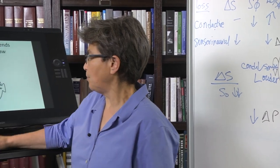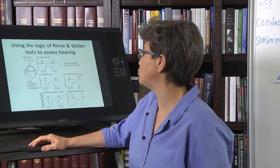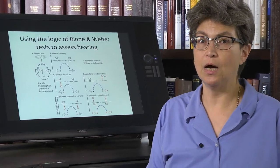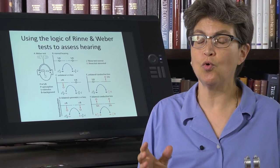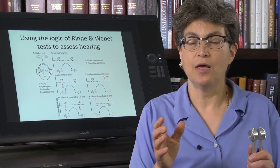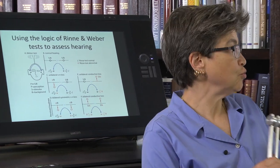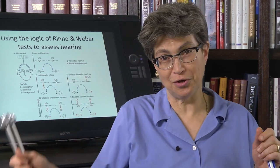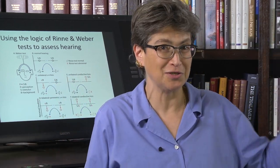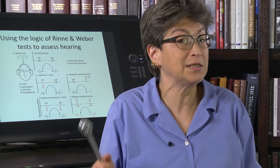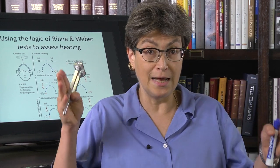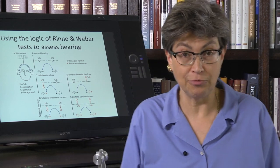This shows you the setup and this shows you the logic. You can go over this on your own time. So one last thing: how do you tell between whether it's a sensory neural loss on one side or a conductive loss on the other side? Weber's law is agnostic as to which of those two is producing an asymmetry in the loudness.